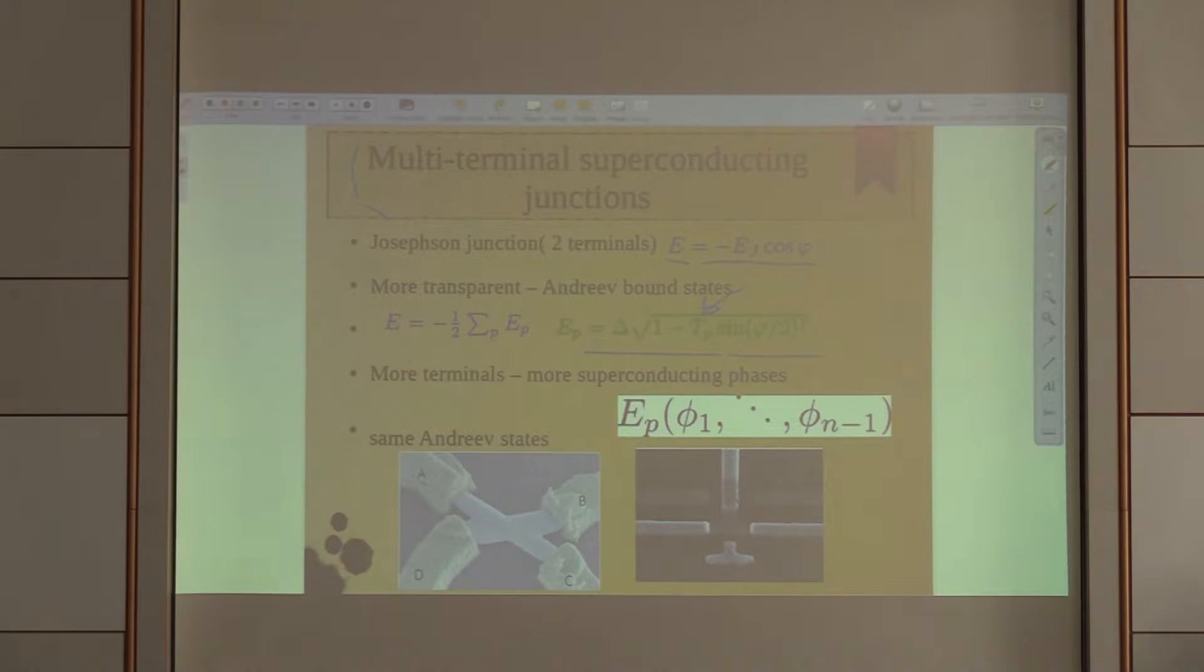Two-terminal junctions have been fabricated for ages and investigated very thoroughly, but there is technical possibility to arrange multi-terminal superconducting junctions. There are two examples, one from Grenoble made from metal with three superconducting terminals and a copper island inside.